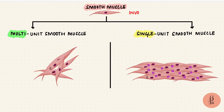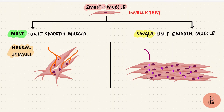Smooth muscles are involuntary muscles. The multi-unit smooth muscles mainly respond to neural stimuli, but the single unit muscles can respond to different types of stimuli, like neural, hormonal, and even stretch.